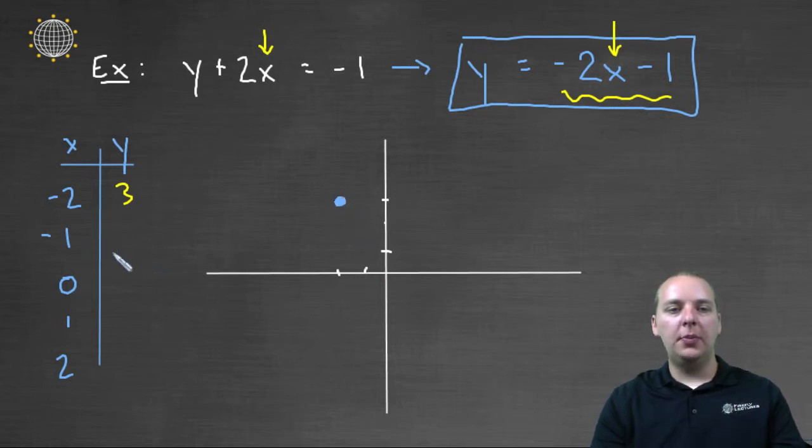Next up plug in negative one. Negative two times negative one is positive two. Two minus one makes one. So we'll plot negative one, one, that's right here. Next up plug in zero. Zero minus one is negative one. And so we'll plot zero comma negative one, which is right here.